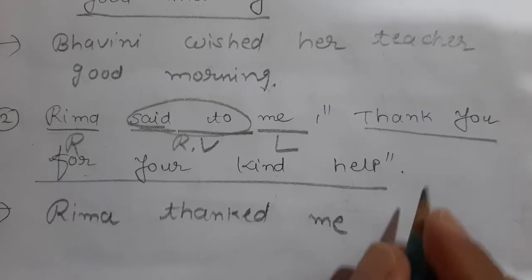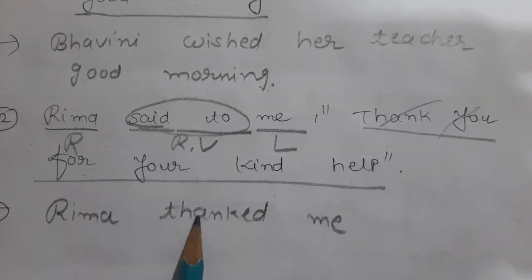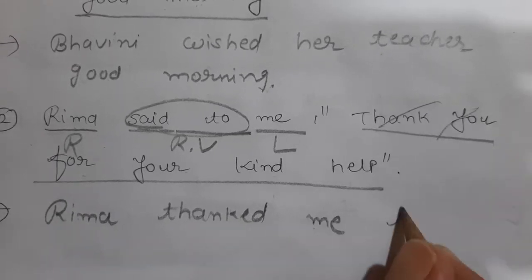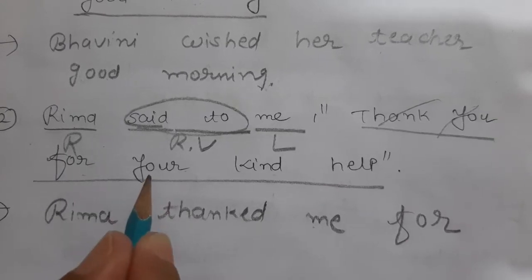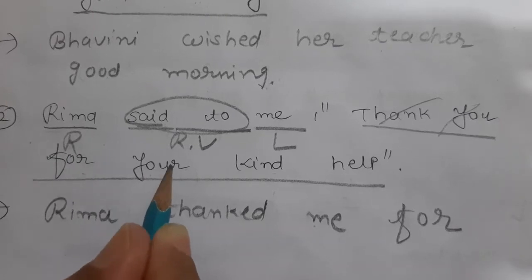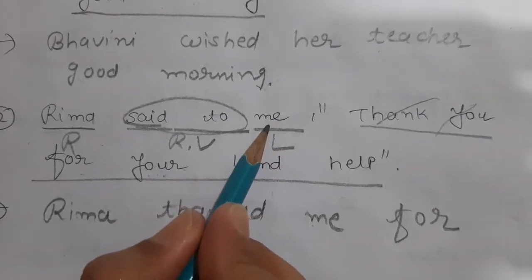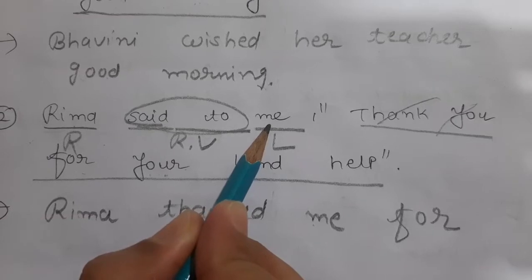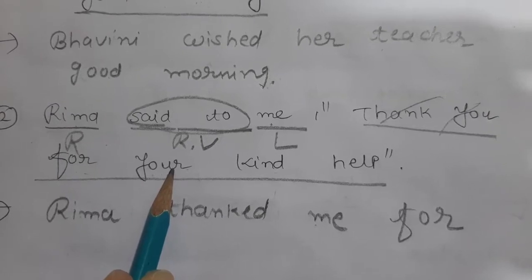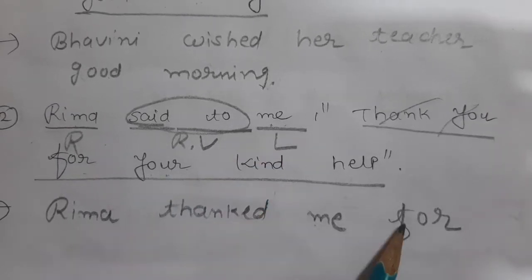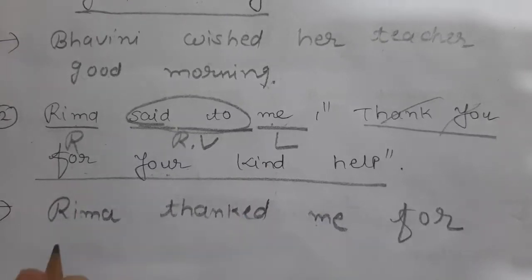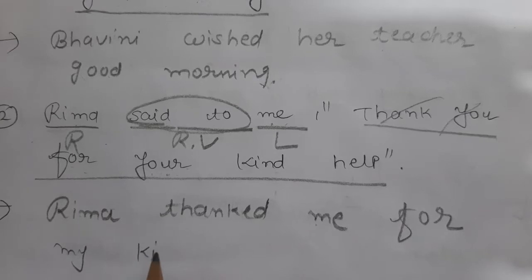As I told you, no conjunction. We will not write 'thank you' again because we have already written it in the reporting verb 'thanked.' Rima thanked me — and we will join the sentence with 'for.' Now, 'your' changes according to the listener. Your listener is 'me,' so in the middle we write second or third person. Here 'me' is not suitable, so we write 'my' — for my kind help.